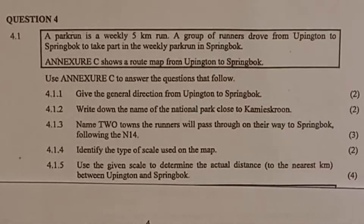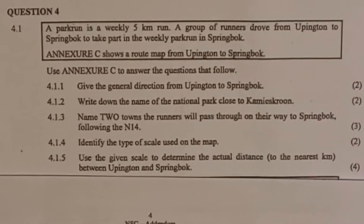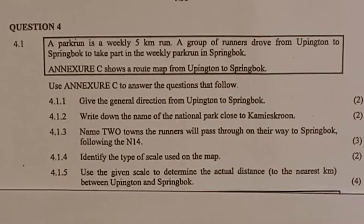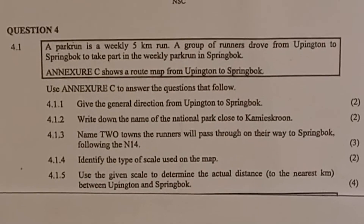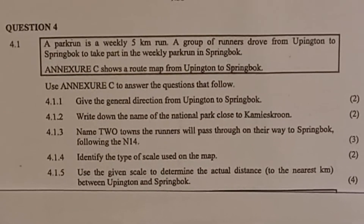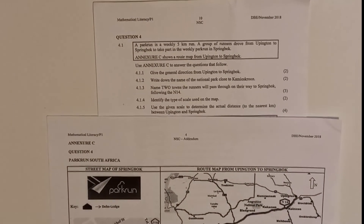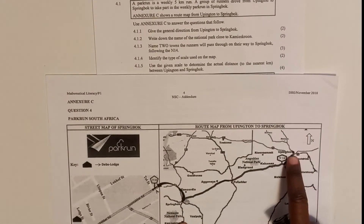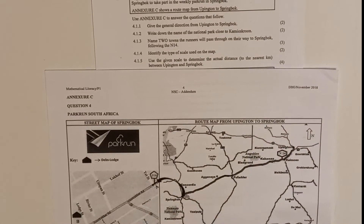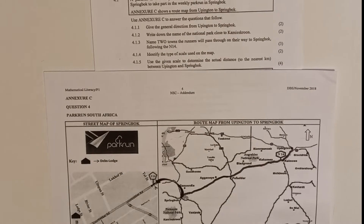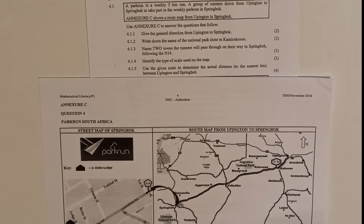A park run is a weekly five-kilometer run. A group of runners drove from Uppington to Springbok to take part in the weekly park run. Annexure C shows the route map from Uppington to Springbok. Always read the question, read it again, understand it, and look at the map before you attempt the question.